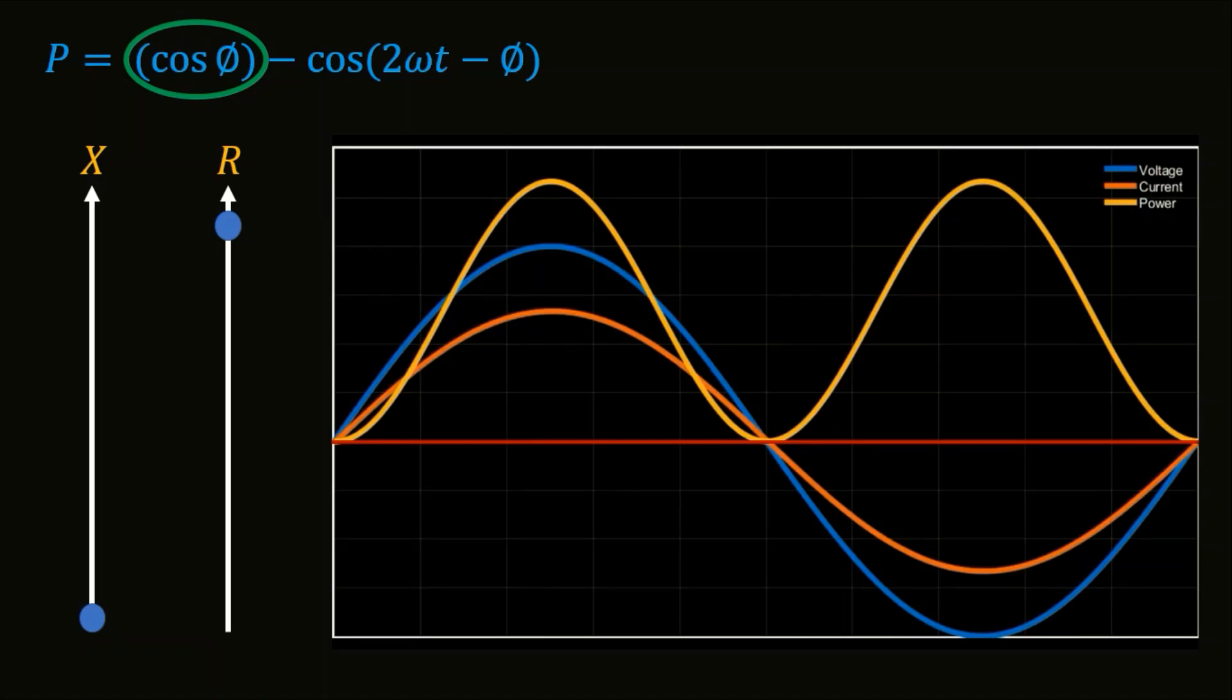Here we will increase the value of X and will decrease the value of R just for illustrative purpose to maintain the value of impedance constant. But you can get an intuition of how this curve moves or starts shifting downwards when the inductive part of the impedance increases.